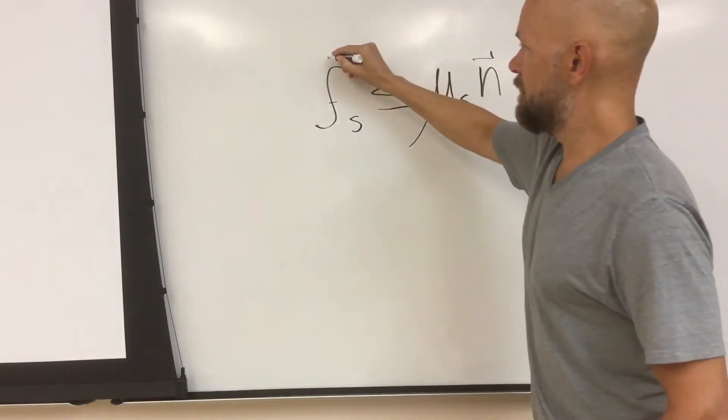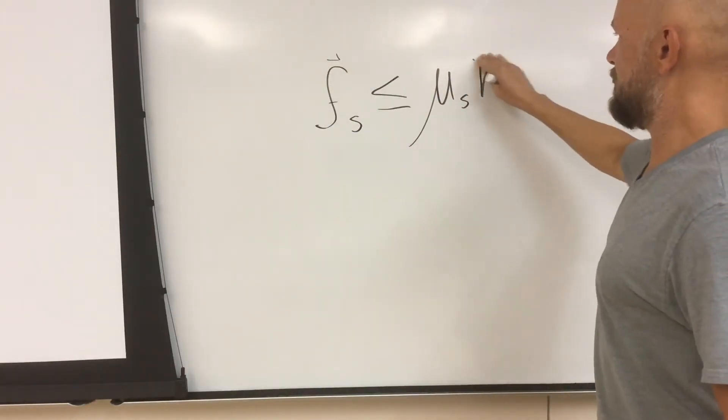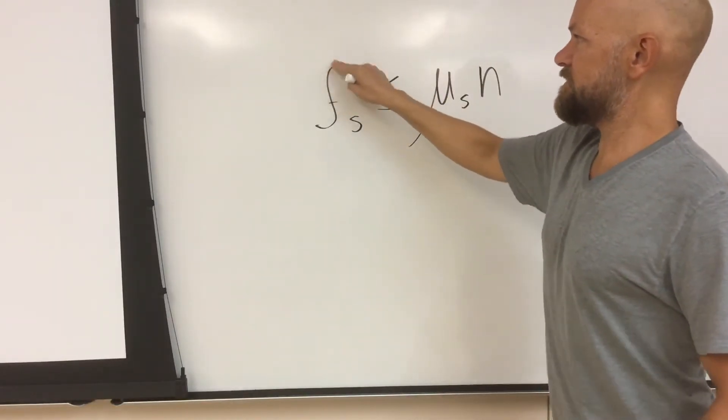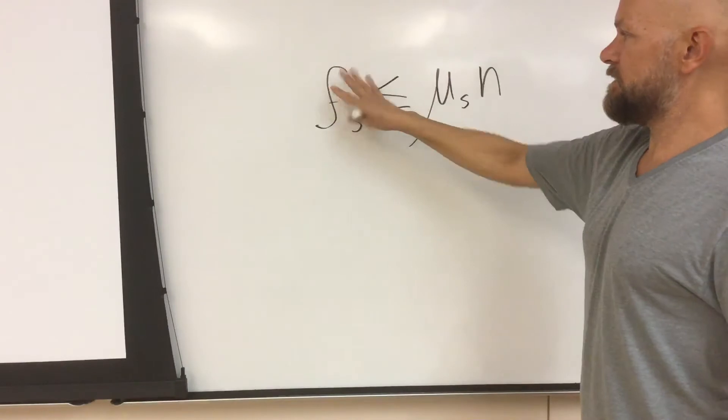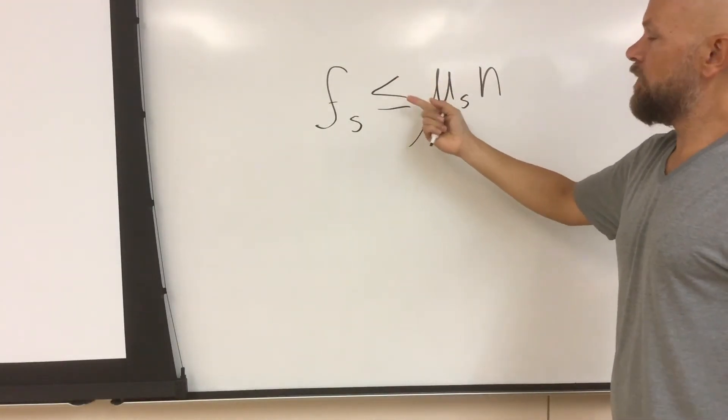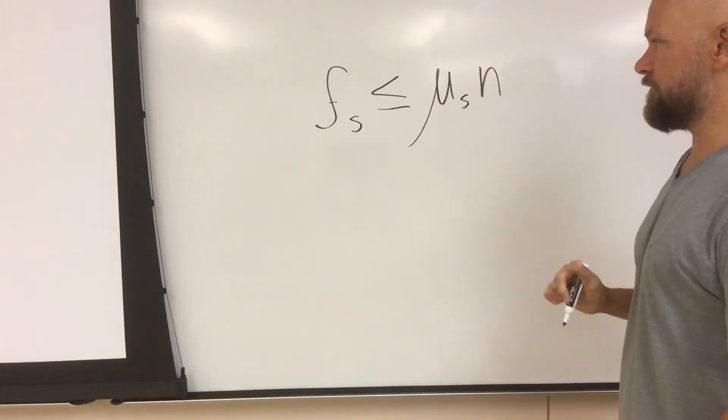Normal force is a vector, friction force is a vector. They don't actually point in the same direction. The normal force points this way and the friction force points this way. So this is just an equation in magnitude. The magnitude of the static friction force could be as little as zero or as great as the coefficient of static friction multiplied by the normal force.